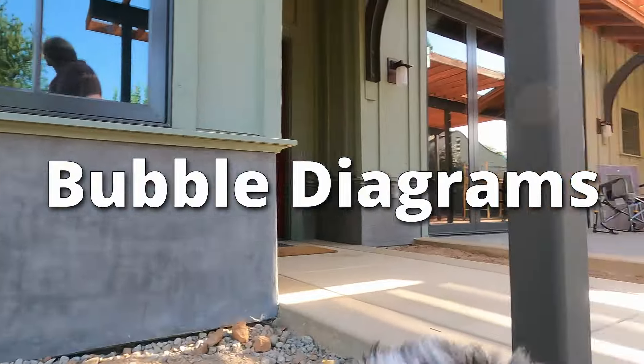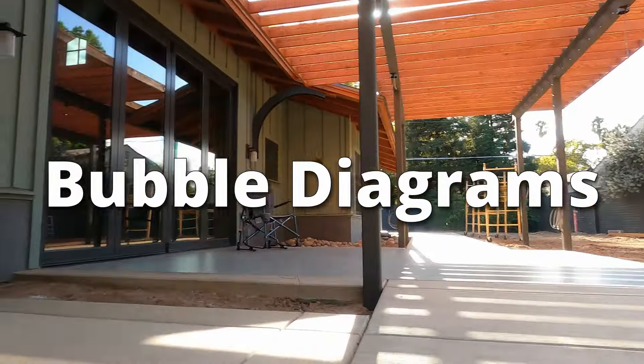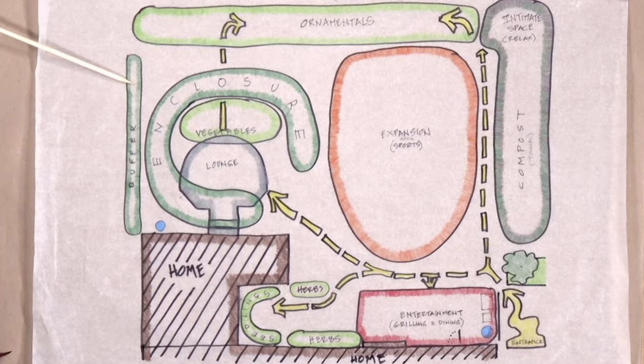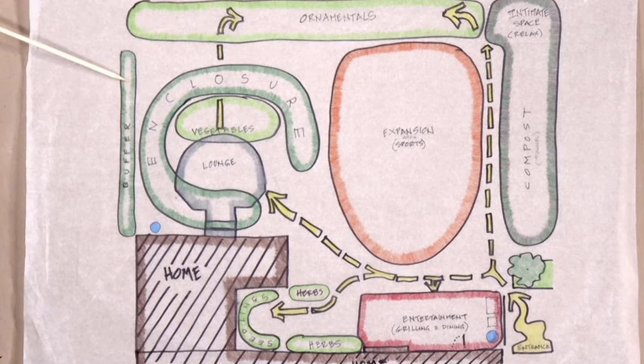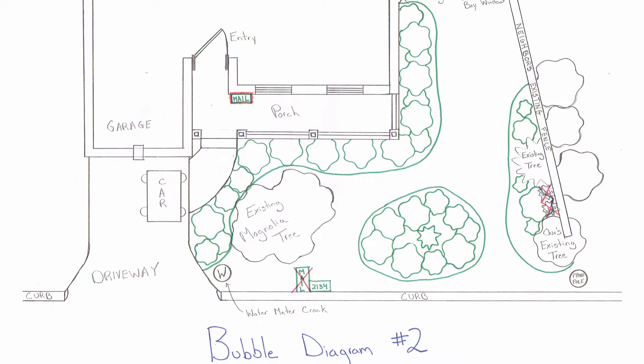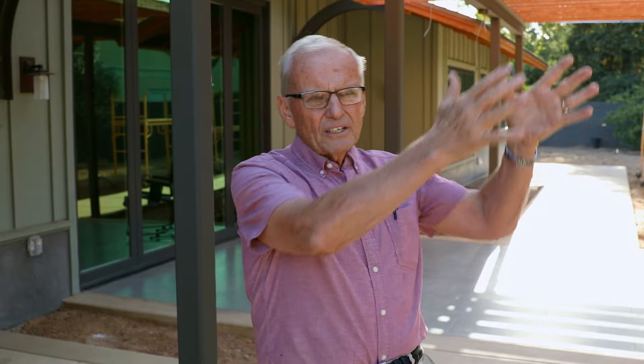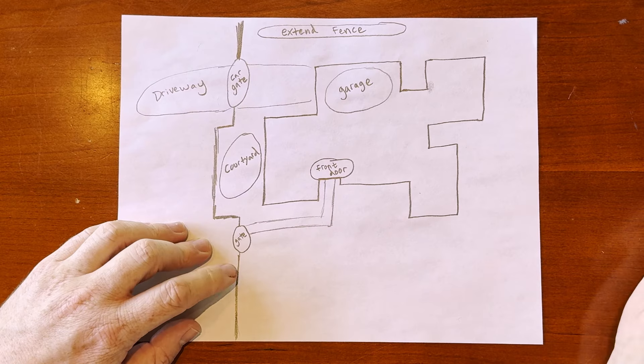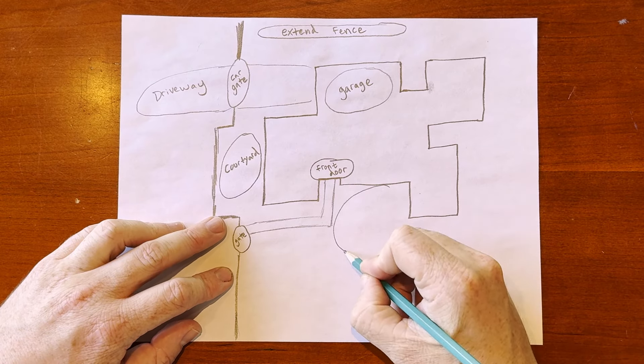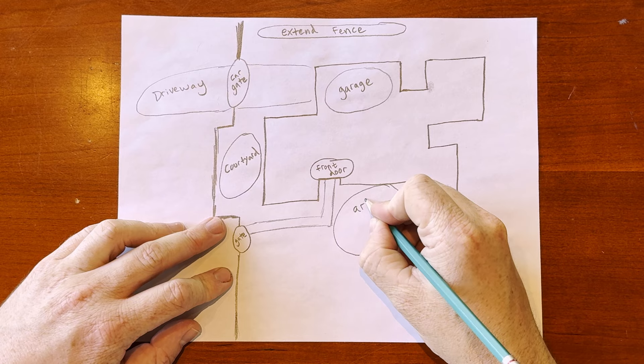Step two is really bubble diagrams, and I offer that as an option for you. Some people might want to skip the bubble diagram stage, but it's the classic way to design a garden. You take that site plan you've analyzed, and you have your list of your program — what you want to include — and then you start drawing bubbles to show where all of these things would work best.